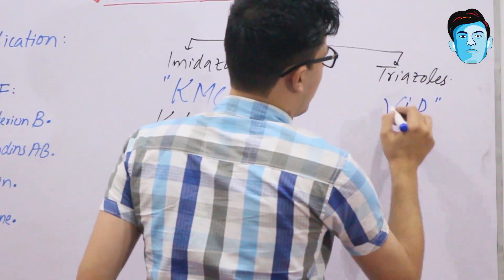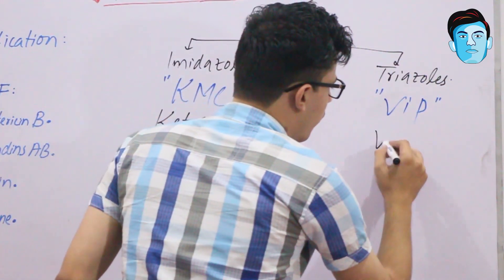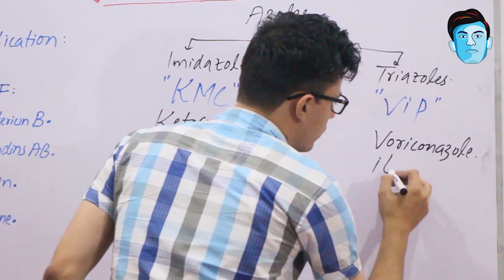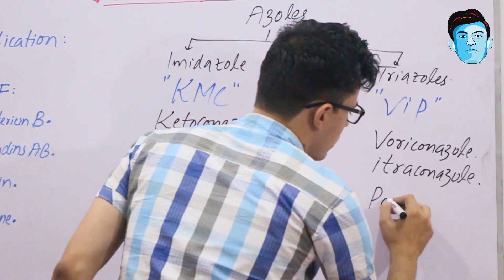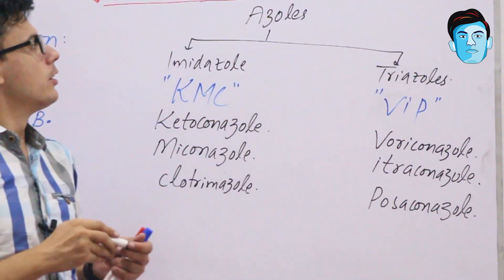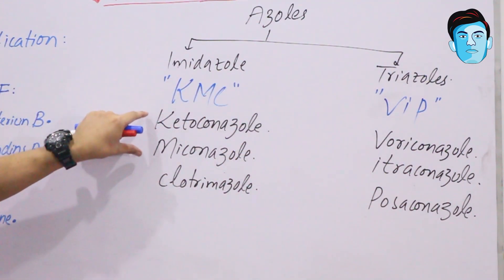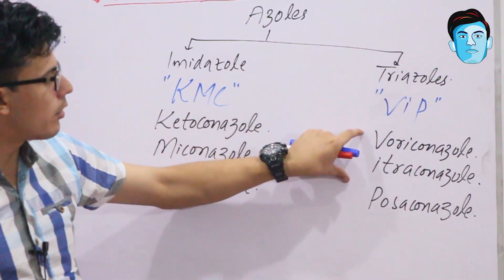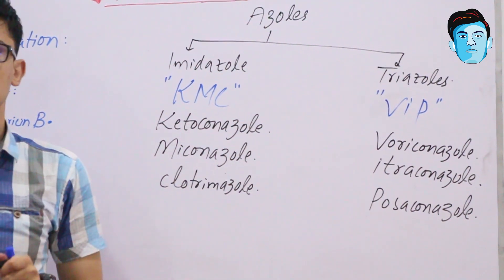For triazoles, the mnemonic is VIP — where V stands for voriconazole, I for itraconazole, and P for posaconazole. So azoles are classified into imidazoles (ketoconazole, miconazole, clotrimazole) and triazoles (voriconazole, itraconazole, posaconazole). This completes the general classification of antifungal drugs.